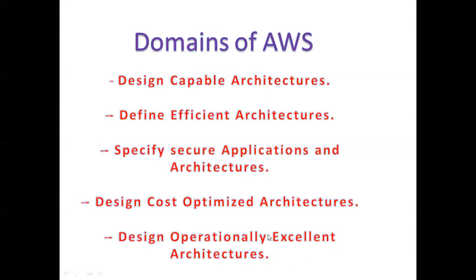The next domain is specify secure applications and architectures. This domain is critical because it assists you in an AWS implementation that features security on many layers. The topics it includes are determining how to secure application tiers, determining how to secure data, and defining the networking infrastructure for a single VPC application.